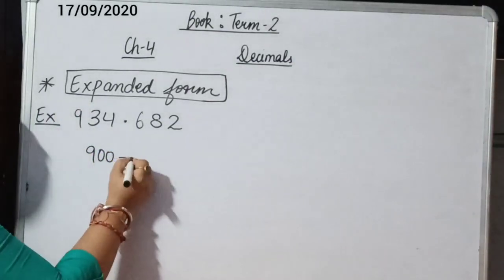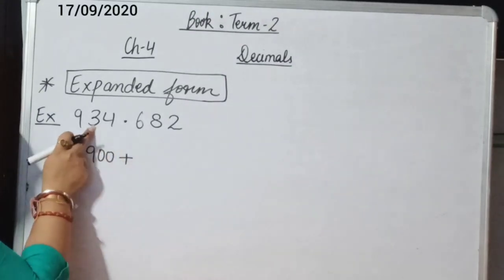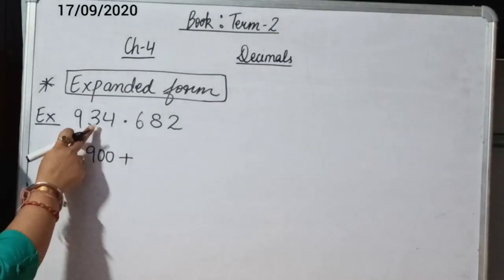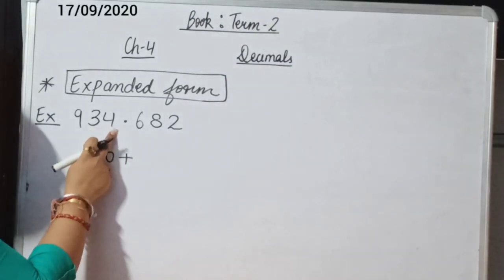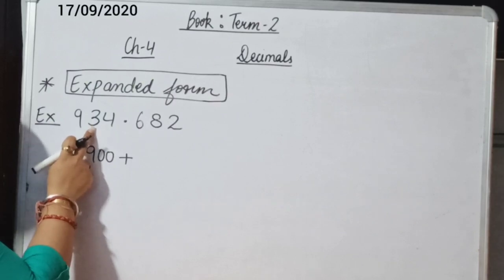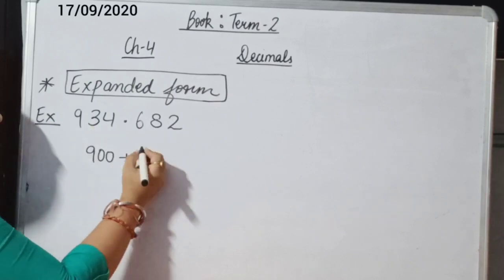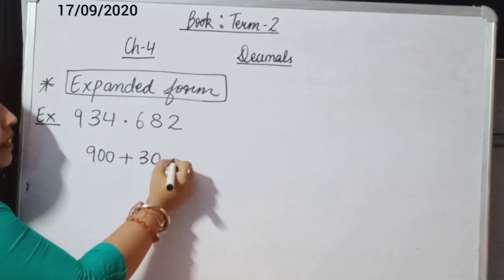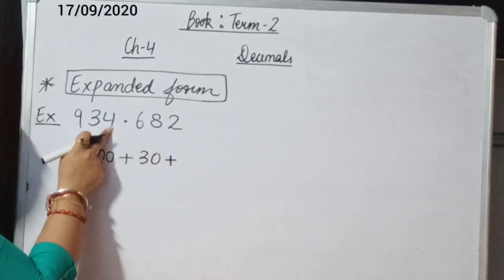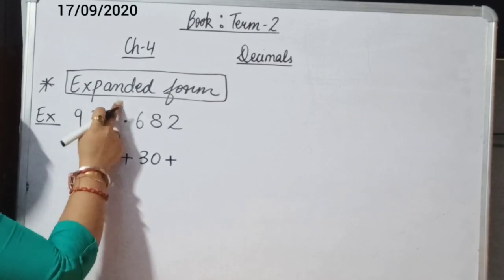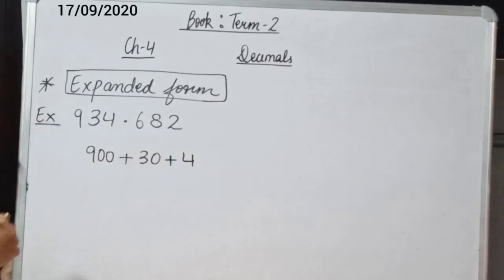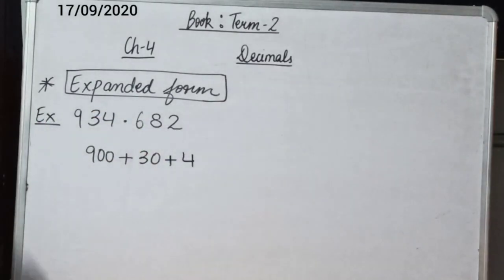Then we move to the next digit, 3. Multiply 3 with its place — the 10s place — so 3 into 10 is 30. And then 4 is at the 1s place, so 4 into 1 is 4. This is the expanded form of the whole part.